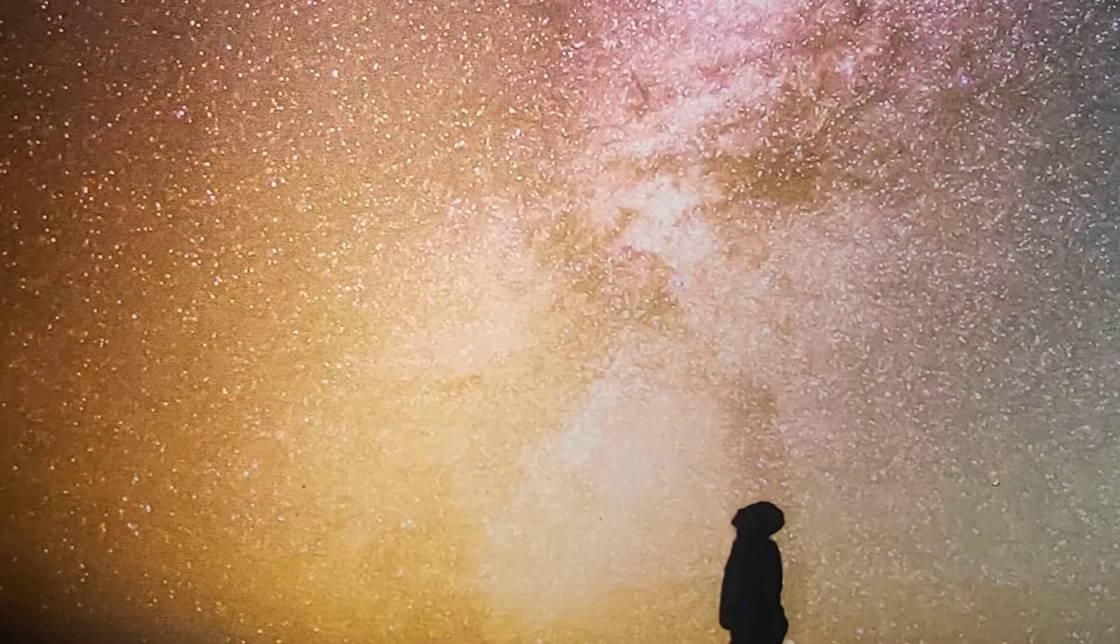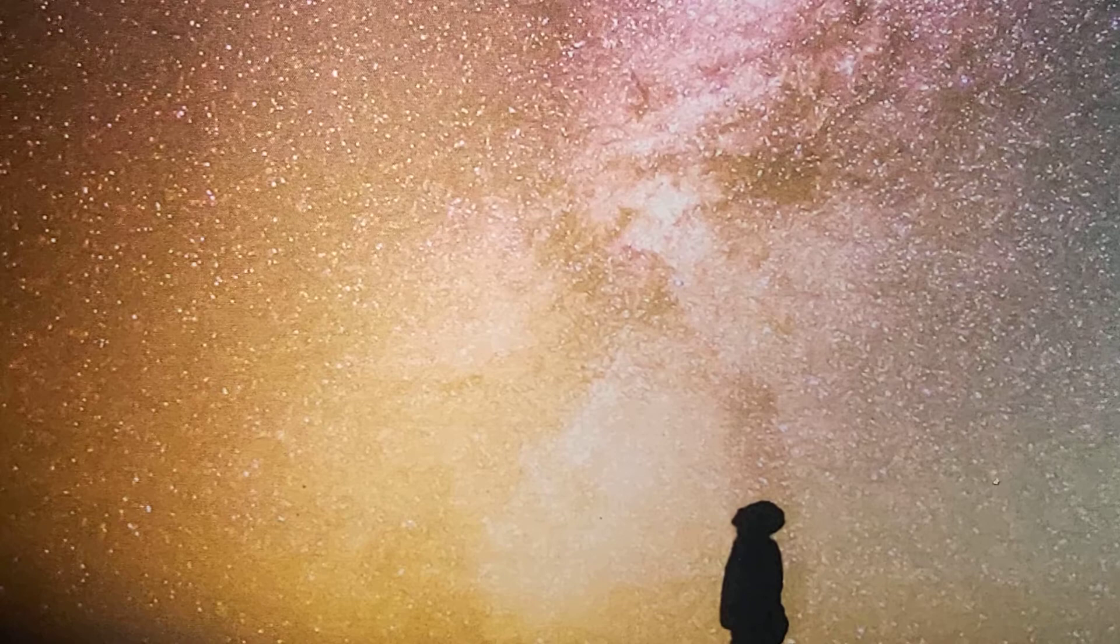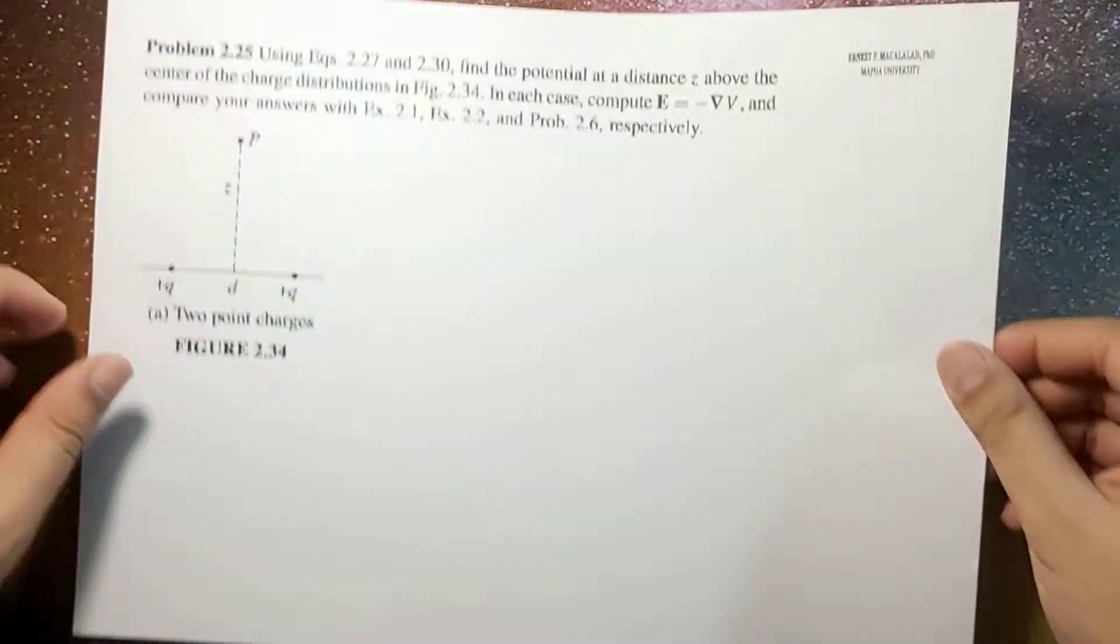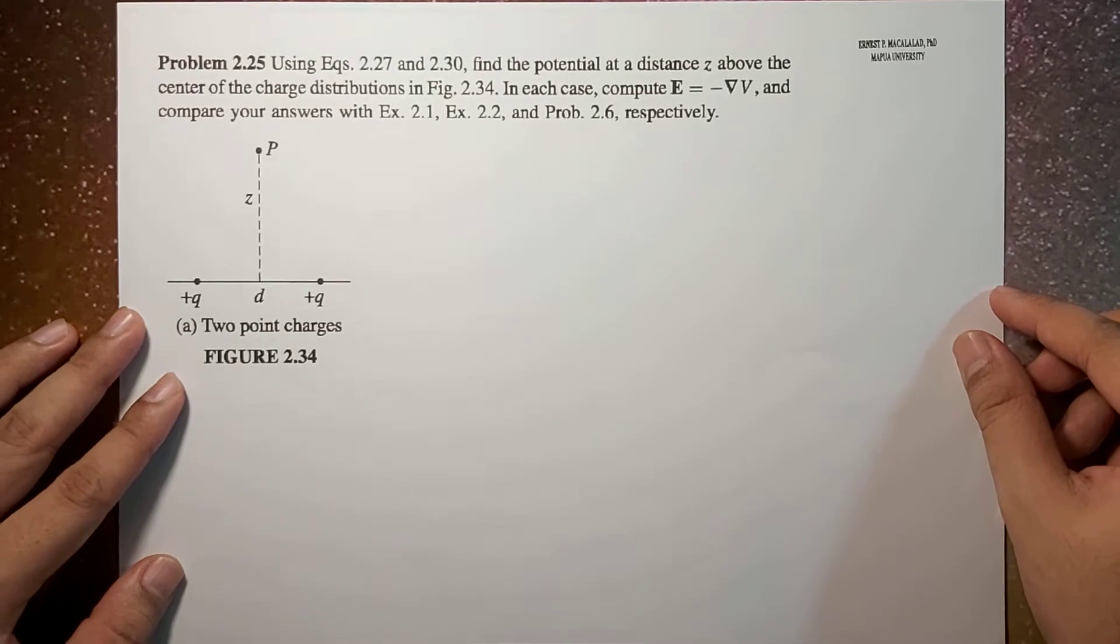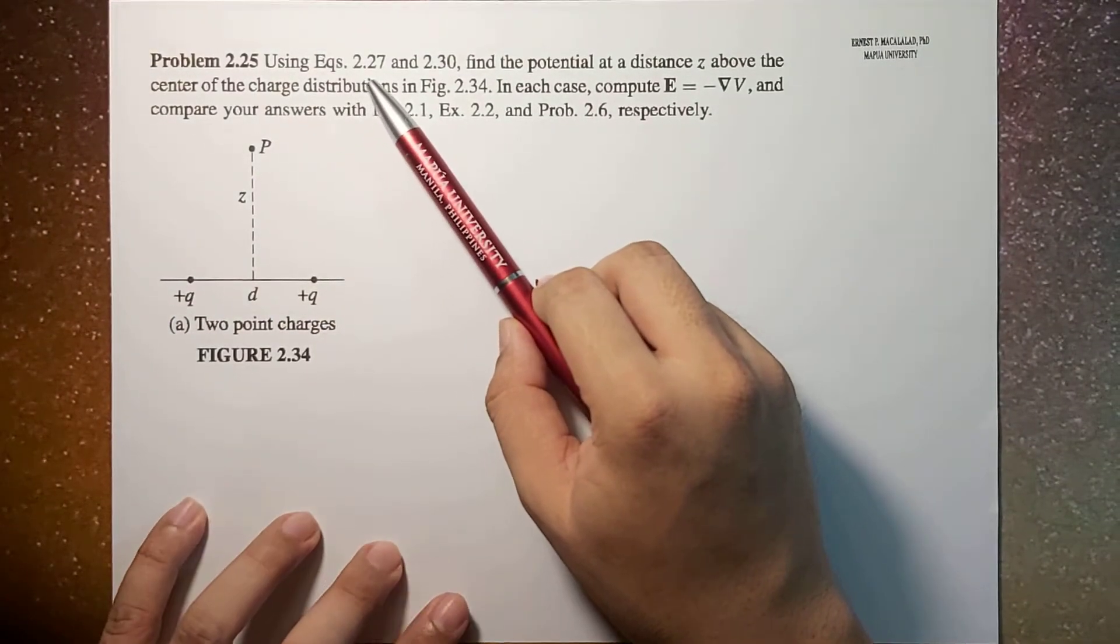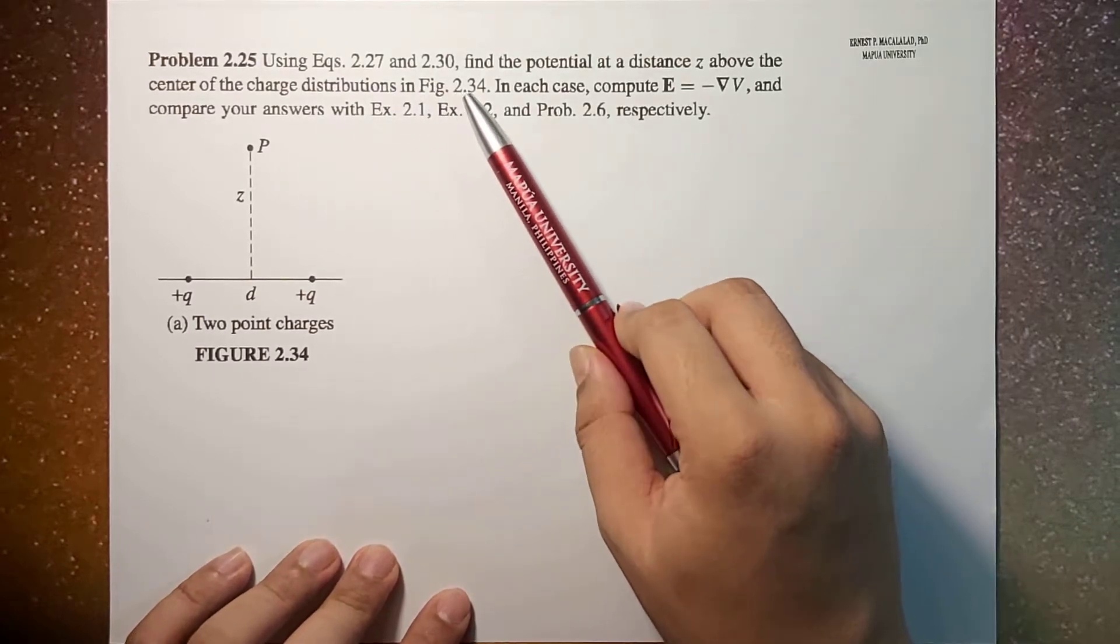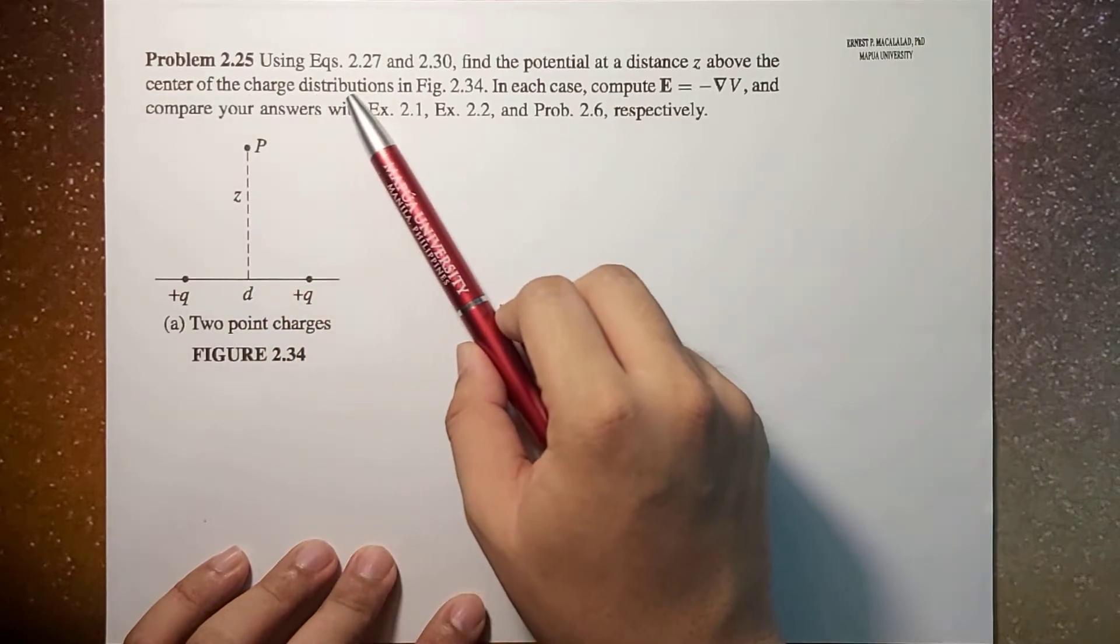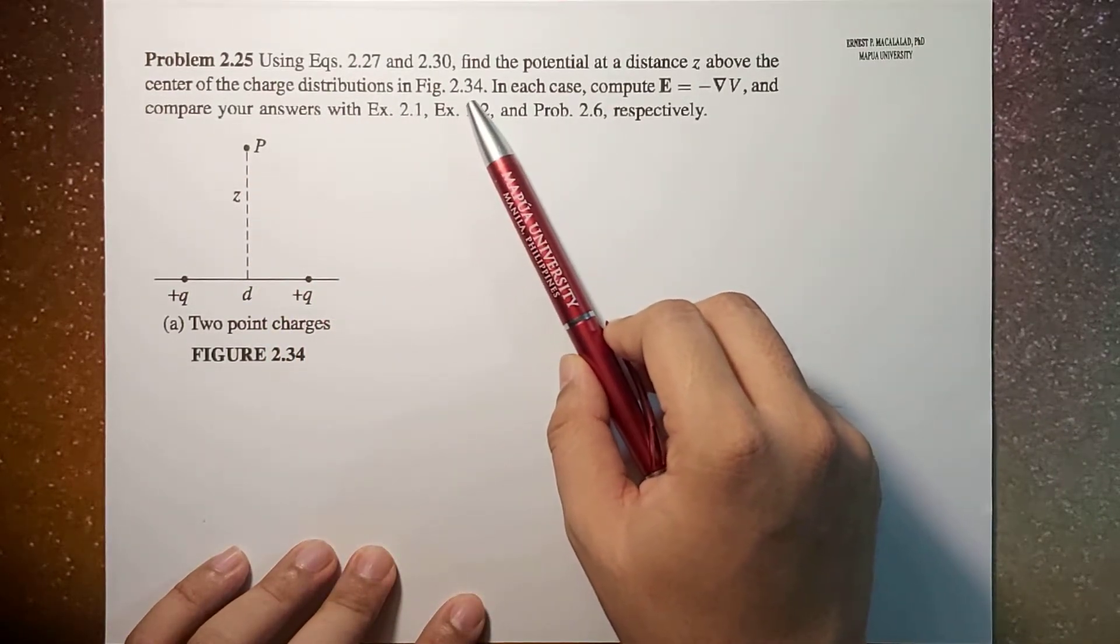What's up guys? It's me, Sir Ernest, and today we're going to solve problem 2.25 of Griffith's 4th edition. The problem reads, using equations 2.27 and 2.30, find the potential at a distance z above the center of the charge distribution in figure 2.34.